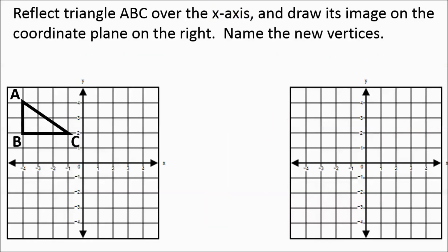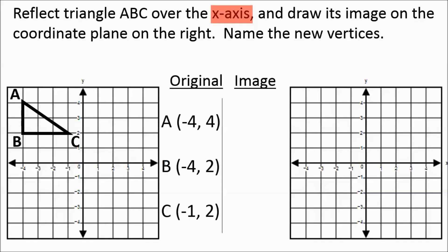We're going to take the same triangle, but now we're going to reflect it over the x-axis. We're going to name the original points again, and this time we're going to highlight the x-axis. All of these vertices of the triangle — points A, B, and C — they're all above the x-axis. In the reflection, all of those points are going to be below the x-axis.